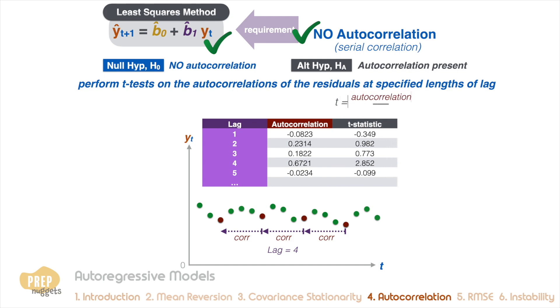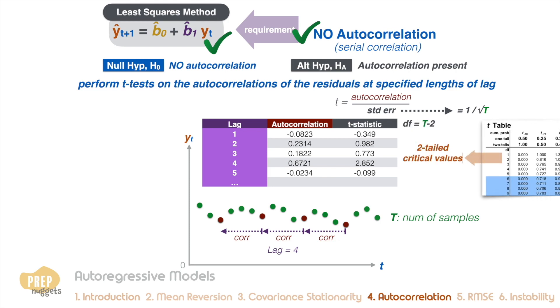The t-statistic is the estimated autocorrelation divided by the standard error, and the standard error is one over square root T, where T is the number of samples. With T minus two degrees of freedom, we determine the two-tailed critical values and test each t-statistic if they're significantly different from zero.